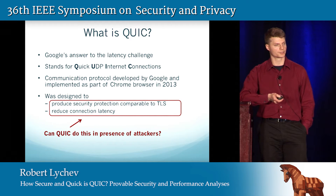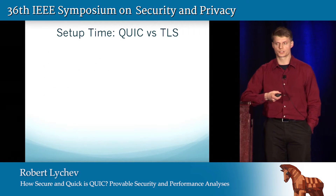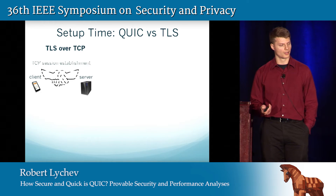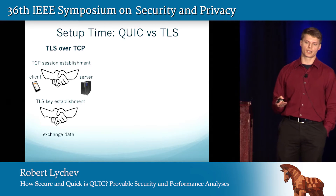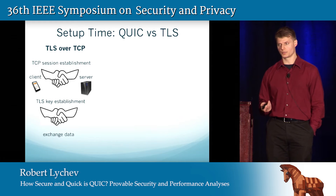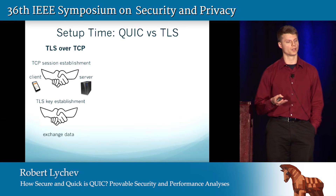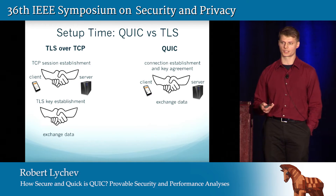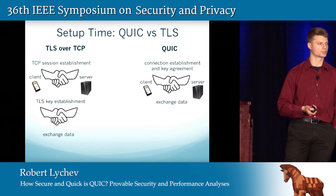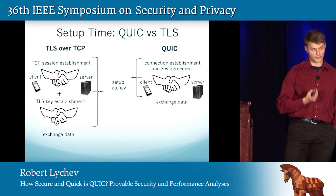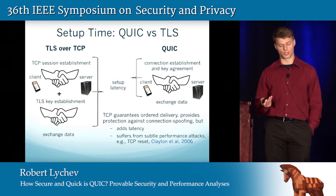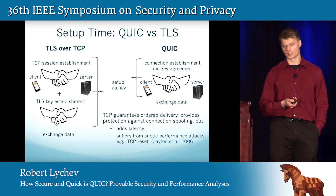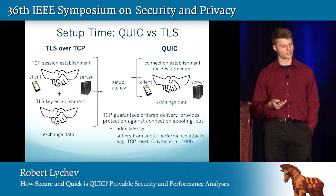Can QUIC actually do this in the presence of attackers? Let me spend a couple of slides to give you an idea of why this question is actually non-trivial, by comparing QUIC and TLS. Starting with setup time: we all use TLS when we want to securely access a bank account online or maybe email, but TLS runs over TCP, which means that to exchange data with TLS, we first have to go through a TCP handshake and then another handshake for TLS key establishment. What QUIC tries to do is combine these two handshakes into one, so connection establishment and key agreement can happen at the same time, and thereby cut the latency in half. There are some benefits to using TCP, such as it guarantees ordered delivery and provides some protection against connection spoofing, but it adds to latency. It also suffers from subtle performance degradation attacks, such as TCP reset, which have gained notoriety as they were found to be used for censorship by some governments.